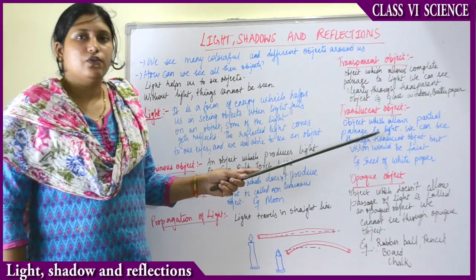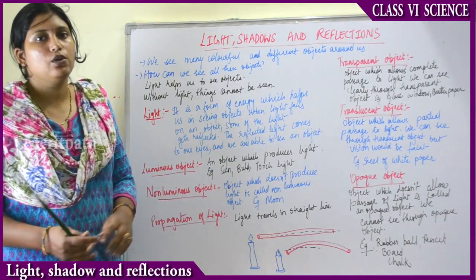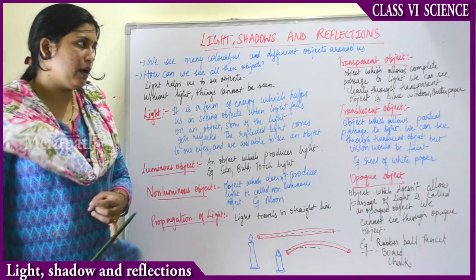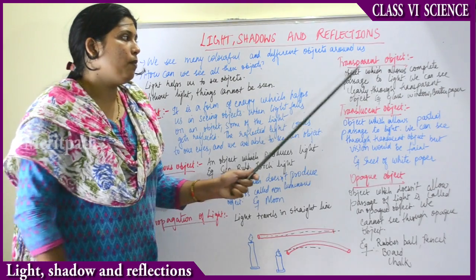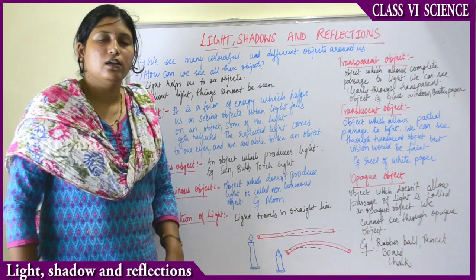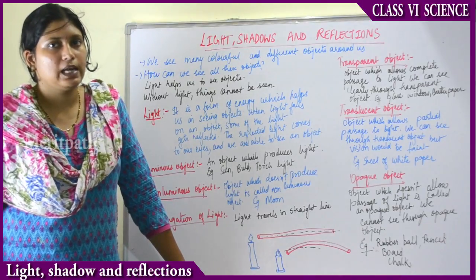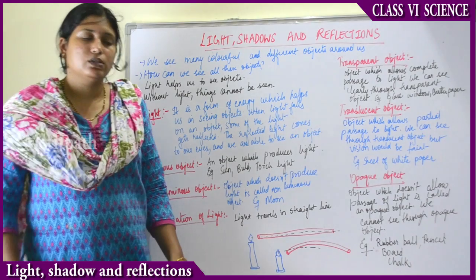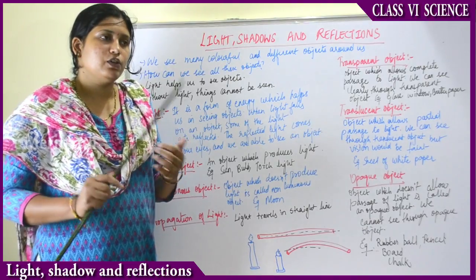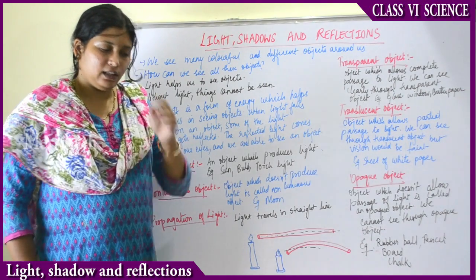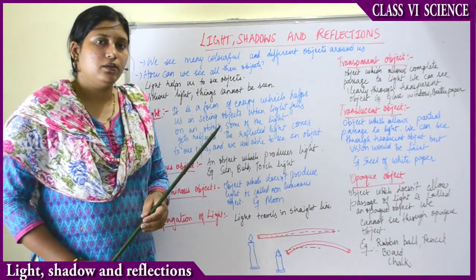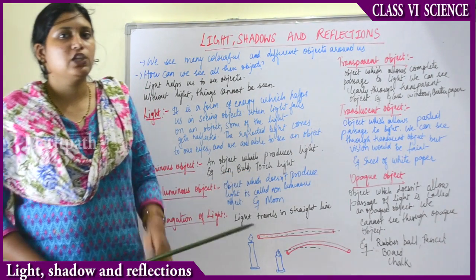There are many objects around us, categorized into transparent, translucent, and opaque. A transparent object allows light to completely pass through it so that we can see the object clearly. Examples of transparent objects are glass, windows, and butter paper — such as the butter paper used in baking cakes. We can see clearly through transparent objects.